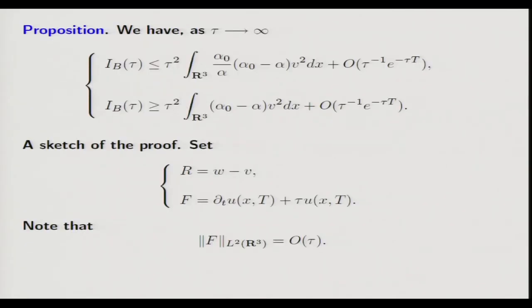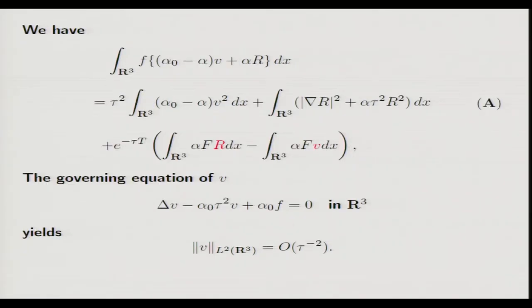Outline of proof: the proof is very simple. We have two bounds — lower and upper — in terms of V and the deviation W minus V. The sketch is as follows: set the deviation as W minus V plus some remainder term R, where R has a bound in terms of τ. From the governing equations of V and W in the Laplace transform domain with remainder term, we use an integration-by-parts identity. This involves an exponentially growing part and a decay part, and the estimation of R and V.